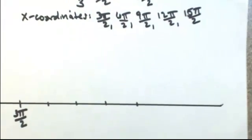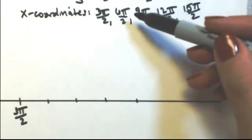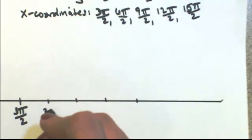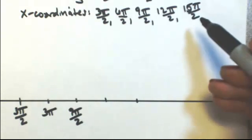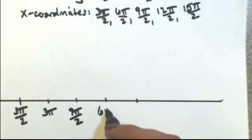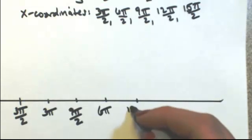So when I go to put that on my x-axis, just reduce as you go. So 6 pi over 2 is the same thing as 3 pi, 9 pi over 2, 12 pi over 2 is 6 pi, and then 15 pi over 2.